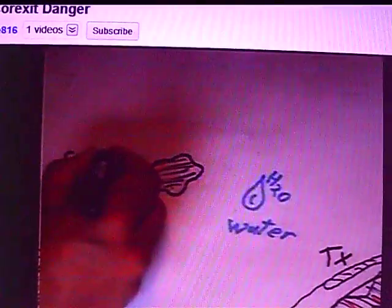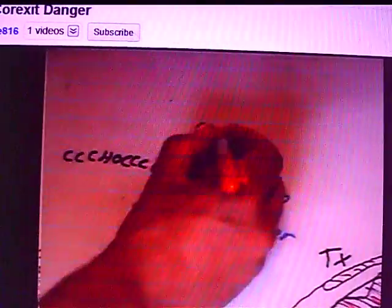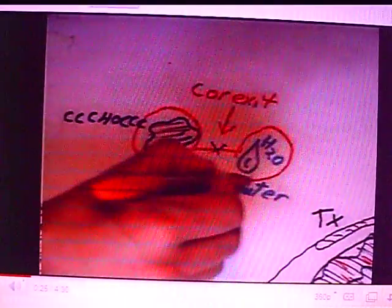The initial response to the crisis was a dispersant known as Corexit. Corexit binds water molecules to oil molecules. Corexit is a type of poison.